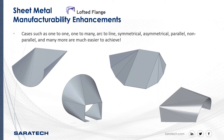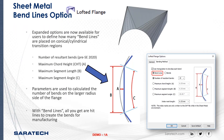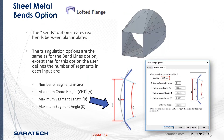The expandable bend line options are now available for users to define how many bend lines are placed on a conical or cylindrical transition region. Under our window we've got the bend lines selected and the number of resultant bends is 10. These parameters are used to calculate the number of bends on a larger radius size of the flange. You can see what my A, B, and C dimensions are — if I calculate 10, it gives me the angles of the segments, the length, and the height. The bends options create the real bends between the planar faces or planar plate.